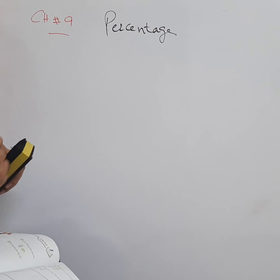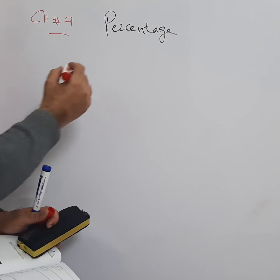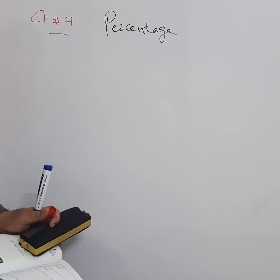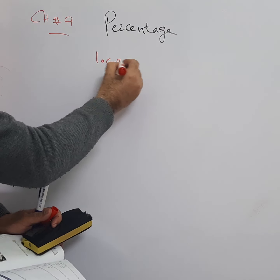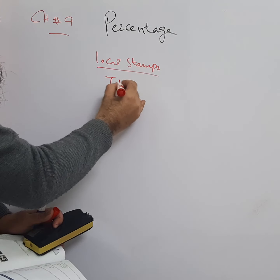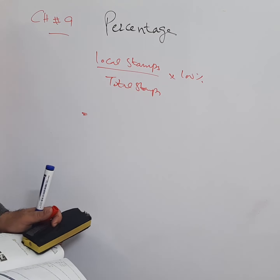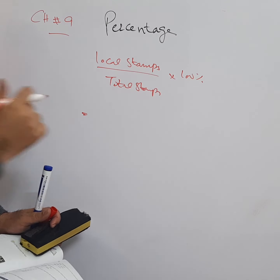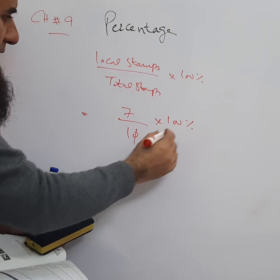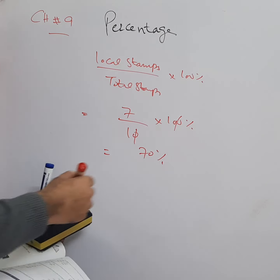Page 201, question number two. Ali has seven local stamps and three foreign stamps. We need to find what percentage of the stamps are local. Local stamps over total stamps, multiply by 100 percent. Local stamps are seven, total are ten, so seven over ten into 100 percent — the zeros cancel, giving 70 percent.